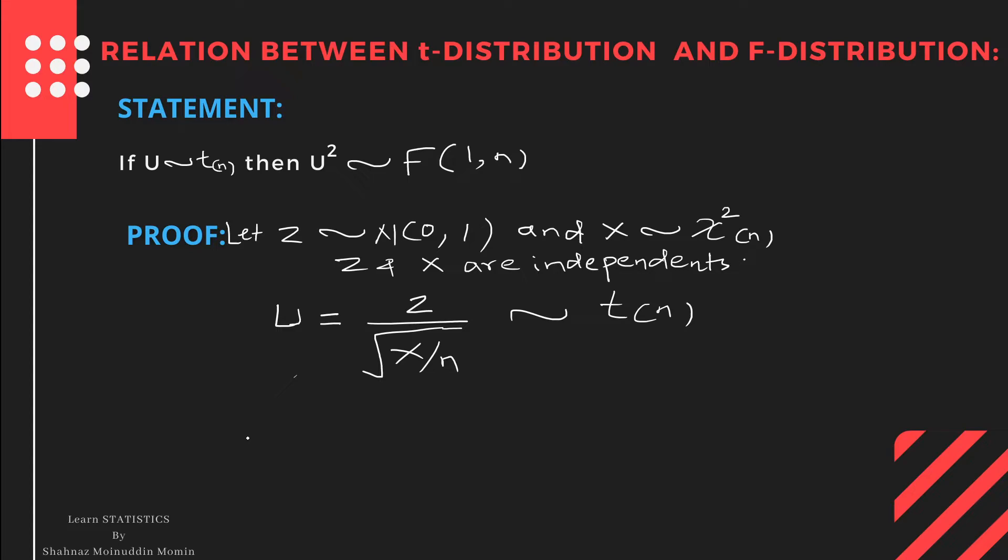Now, I am squaring both sides. What will happen? U² is equal to Z² divided by X upon n. The square root cancels.